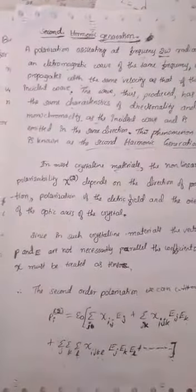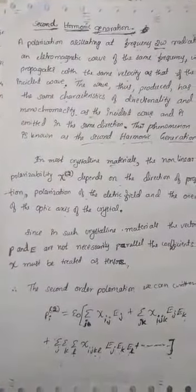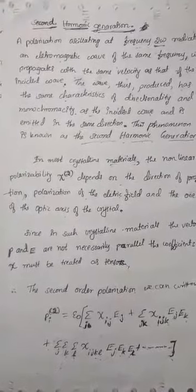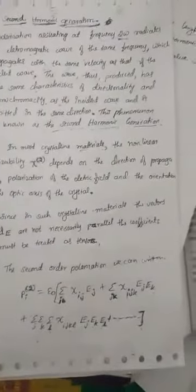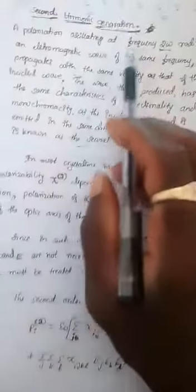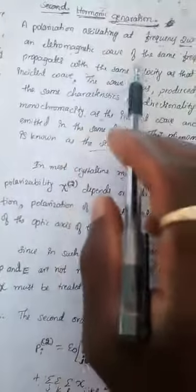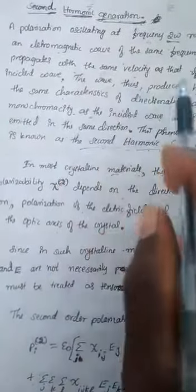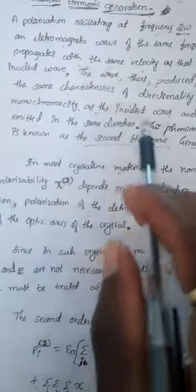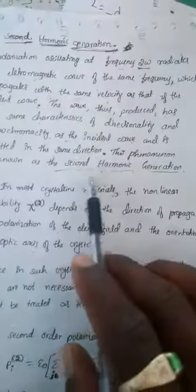Hello everyone. Last class we were discussing nonlinear optics and harmonic generation. Now we go to second harmonic generation. We have already derived the equations for first order, second order, and third harmonic generation. Second harmonic generation means a polarization oscillating at frequency 2ω radiates an electromagnetic wave of the same frequency, propagating with the same velocity as the incident wave, with the same directionality and monochromaticity, emitted in the same direction.